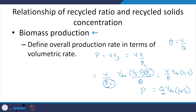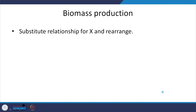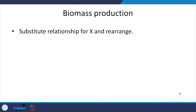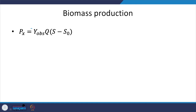So the overall production rate in volumetric terms is Q times Y_obs times (S_naught minus S). This much substrate is being consumed, and Y_obs is the observed yield telling us how much substrate is converted into biomass. Multiplying by Q gives the relevant mass flow rate. Note that it should be (S_naught minus S), not (S minus S_naught), to ensure biomass production is positive.